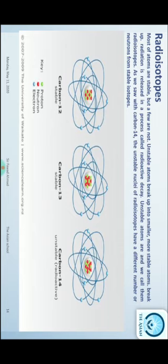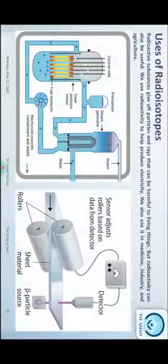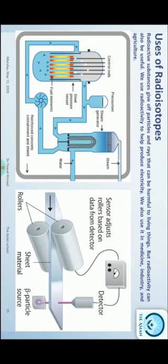Carbon-12 and carbon-13 are stable, while carbon-14 is unstable. Uses of radioisotopes: radioactive substances give off particles and rays that can be harmful to living things, but radioactivity can also be useful. We use radioactivity to help produce electricity, and we also use it in medicine, industry, and agriculture.